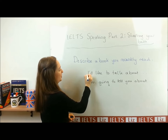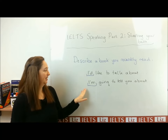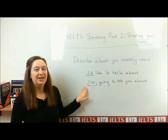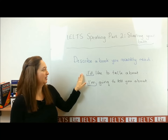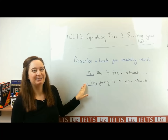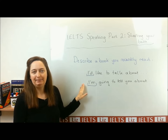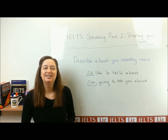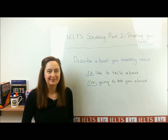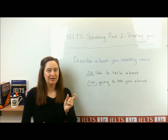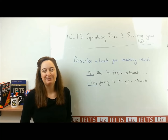You can also see here that I've written 'I'd' and 'I'm.' So we don't say 'I would like to tell you about' — we say 'I'd' and 'I'm.' This is to help you get a better band score for your pronunciation. When you use the contraction 'I would' → 'I'd,' this is better for your pronunciation.